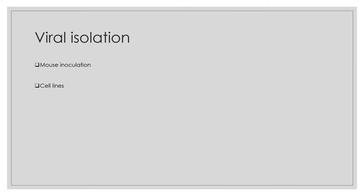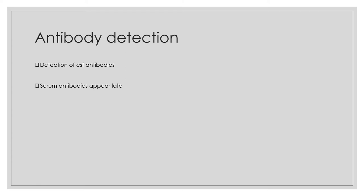Viral isolation can be done by mouse inoculation or cell lines; cell line isolation is the preferred method but is nowadays not commonly used. For antibody detection, CSF antibodies are more significant than serum antibodies because serum antibodies appear late and can also be present after vaccination. CSF antibodies are not produced in response to vaccination — they appear only in rabies-infected individuals.